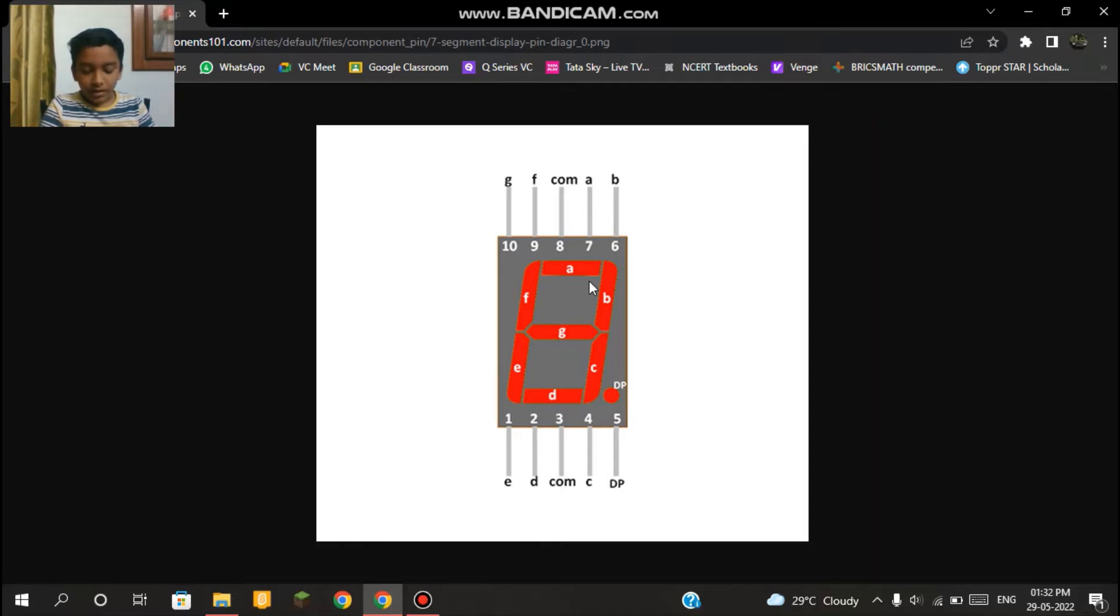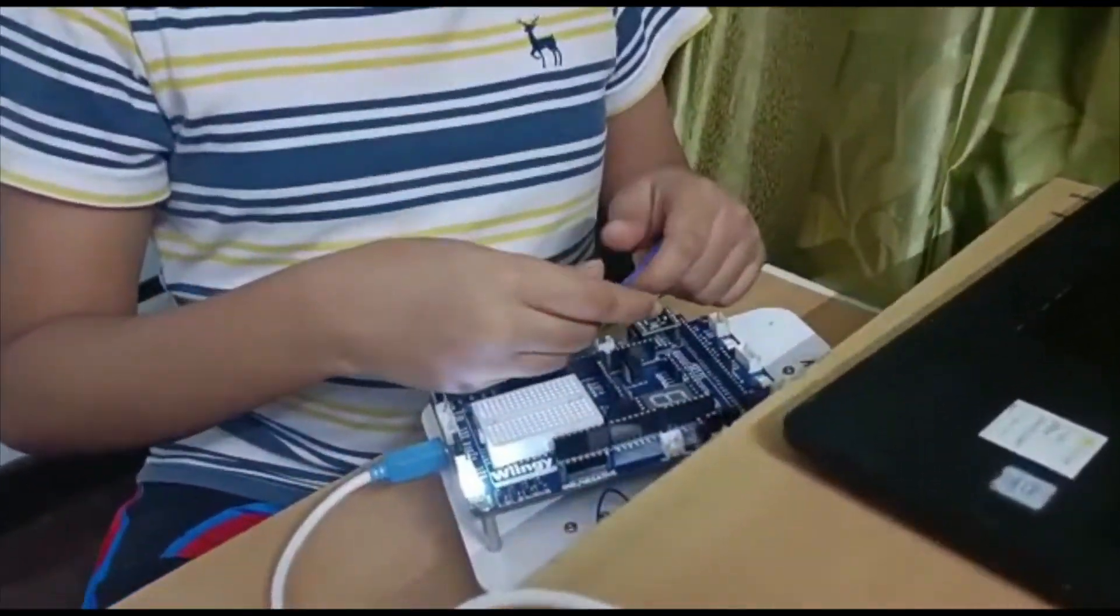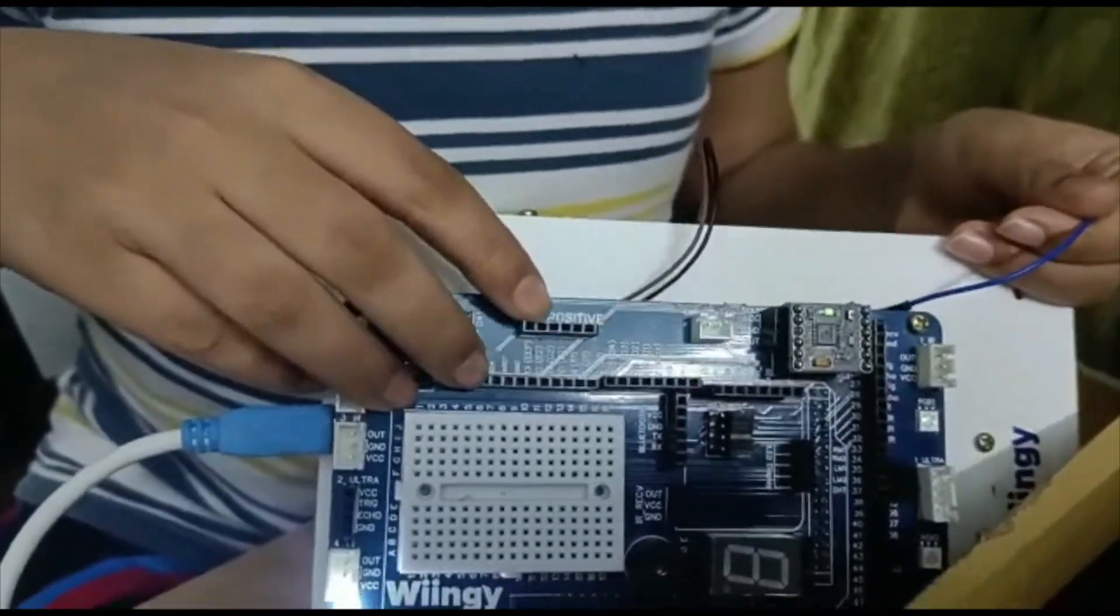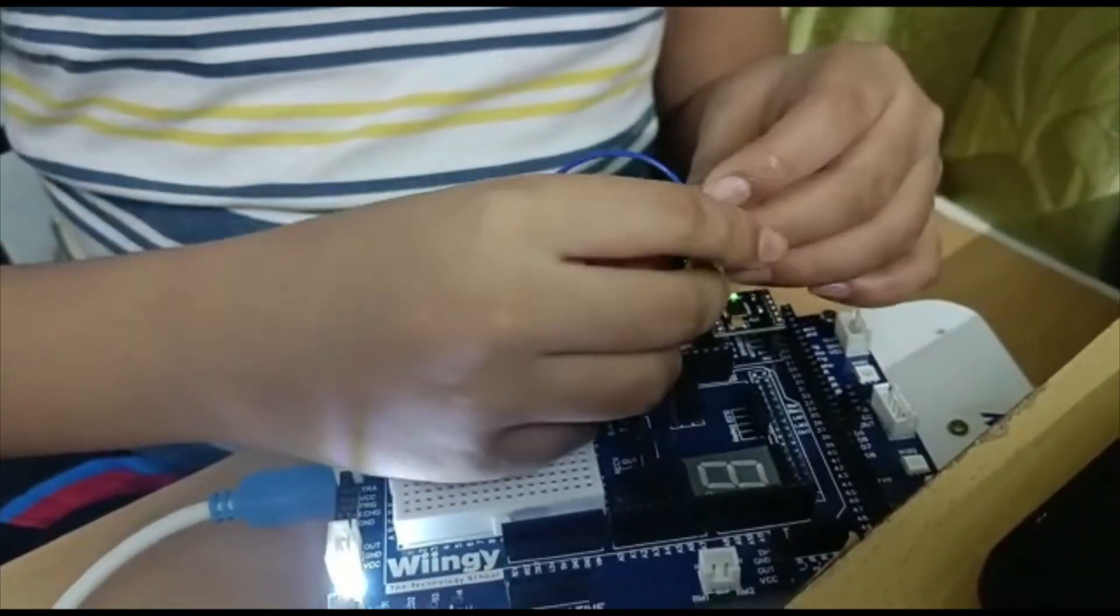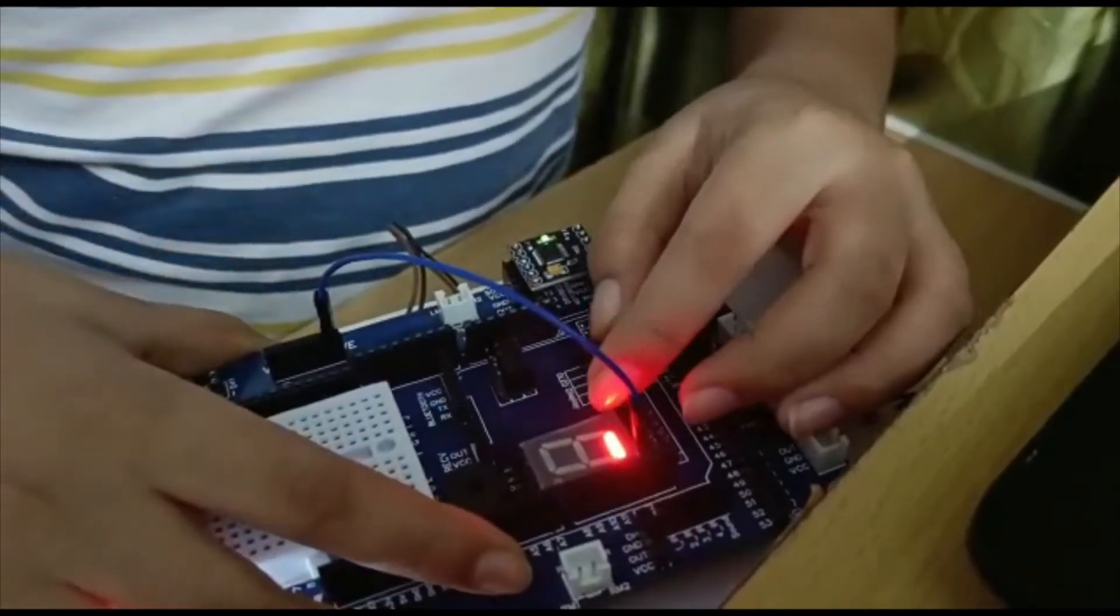Now let's take a jumper wire and connect this end to our Winboard's positive slot and the other end to A in our 7 segment display, and this part will turn on.